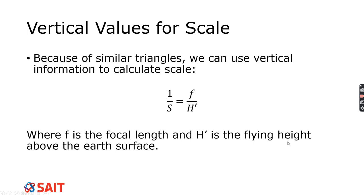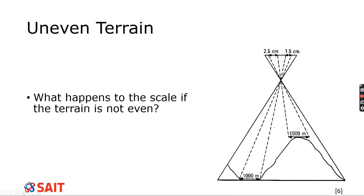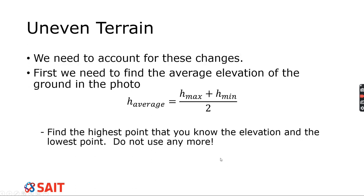This works really well when you have a flat surface, but unfortunately surfaces are not always flat. The scale can be different depending on where you are in the aerial photo because variable terrain changes that scale. To account for this, we need the average elevation. We need the highest point and the lowest point in the aerial photo — the highest ground elevation is added to the lowest ground elevation and divided by two to get the average.